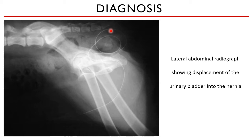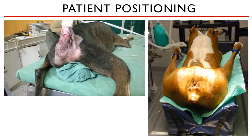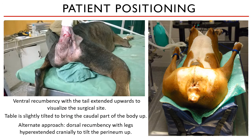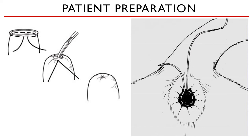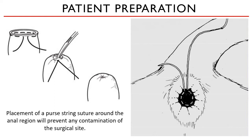The patient may be positioned on ventral recumbency with the tail extended and secured upwards to visualize the surgical site. The table may be tilted up with its backside up to elevate the caudal part of the body. Some have also chosen to place the patient on dorsal recumbency with the legs hyperextended cranially to tilt the perineal area upward. The decision as to what position the patient will be in is up to the surgeon. Since the anal region is very close to the surgical site, it is sealed with a purse string suture to prevent contamination.